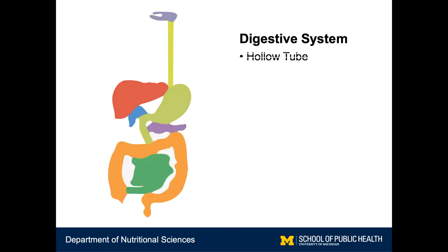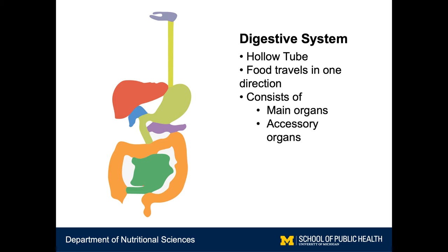One way to think of the digestive tract is a long, convoluted, hollow tube. Food only travels in one direction, in ideal cases. The digestive tract consists of a variety of organs which we can categorize into main organs and accessory organs. Main organs are the organs that come in direct contact with the food, while accessory organs do not come in direct contact with food, but provide extra substances that help in the digestion and absorption.